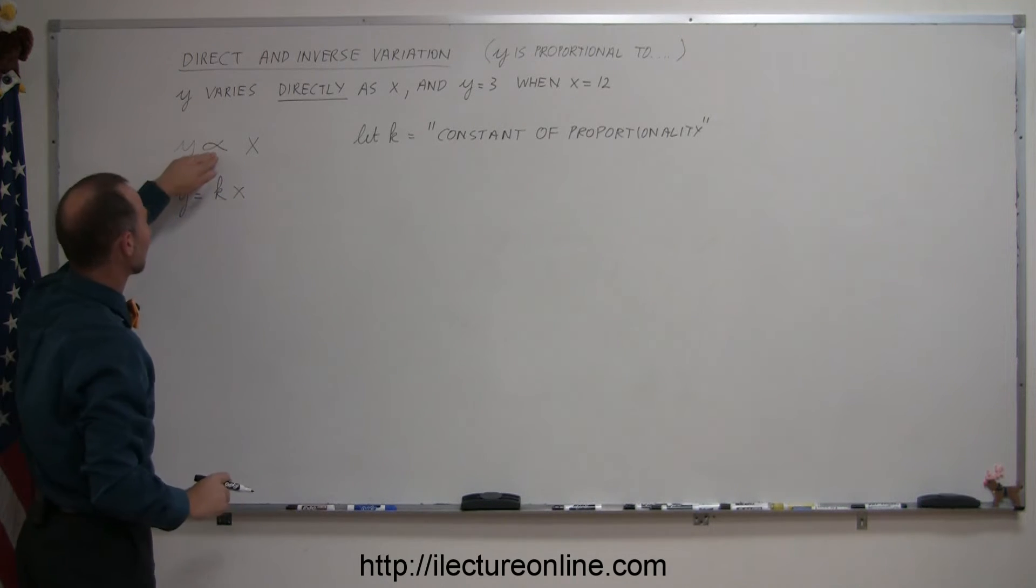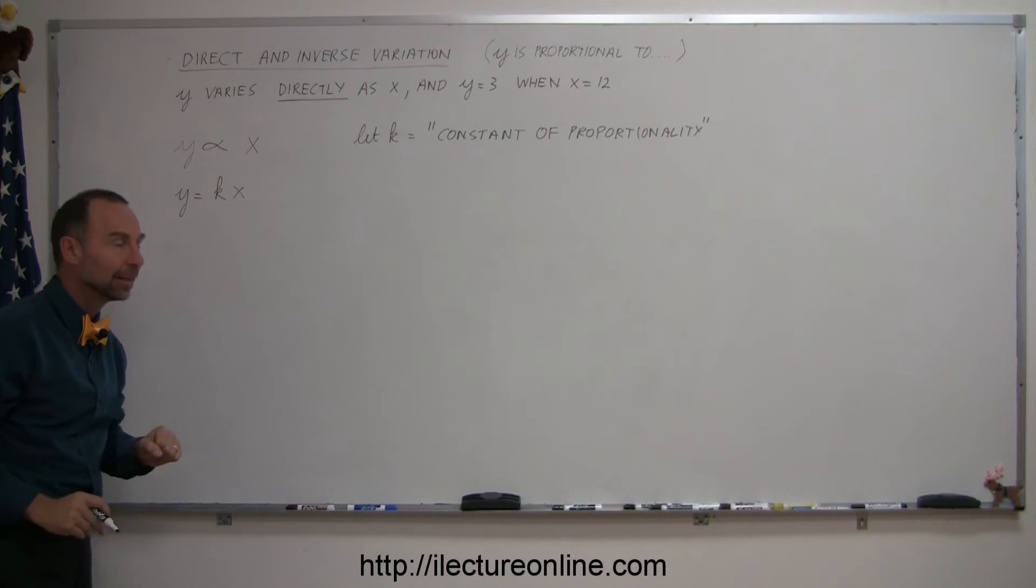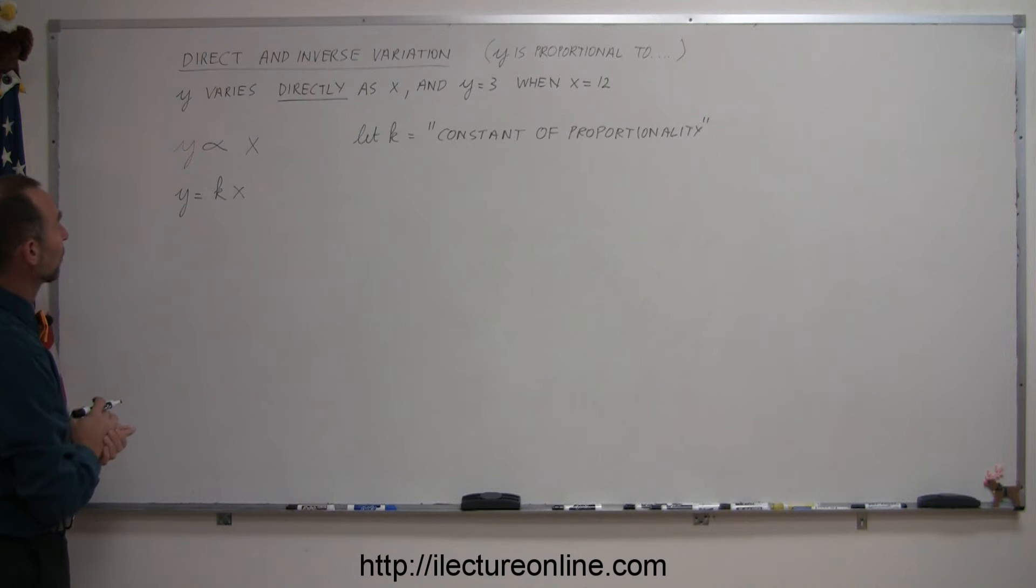So to turn proportionality into an equation, you have to add this constant of proportionality. So you multiply that into your variable in order to turn into an equation.